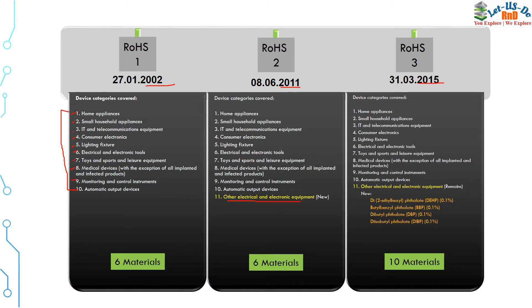In 2015, RoHS 3 was introduced. It included everything in RoHS 2 and additionally introduced four phthalates: DEHP (di(2-ethylhexyl) phthalate), BBP (benzyl butyl phthalate), DBP (dibutyl phthalate), and DIBP (diisobutyl phthalate). These were added to the six metals already present in RoHS 1 and RoHS 2, bringing the total to 10 restricted materials in RoHS 3.